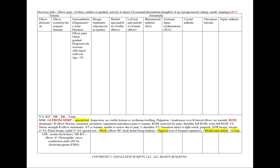In osteoarthritis, or DJD, we'll see elbow pain with an onset that's more gradual but progressively worsening. Classically, it's alleviated with rest and seen in an older patient.